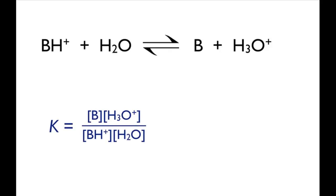But again it's more normal to take the constant, that is the concentration of water, out of the expression to give an expression for Ka. This is the acidity constant for the conjugate acid of the base.